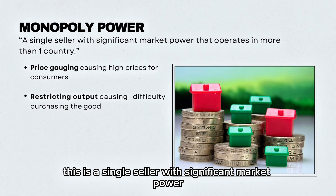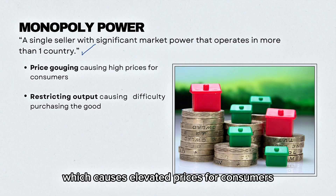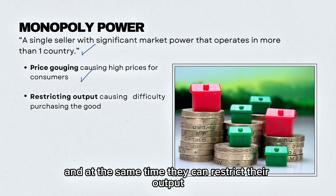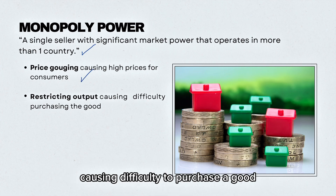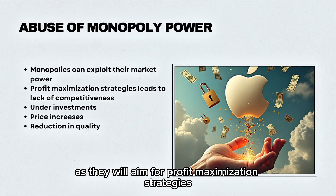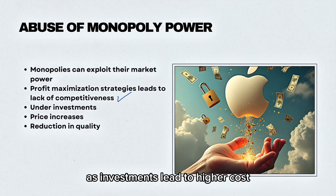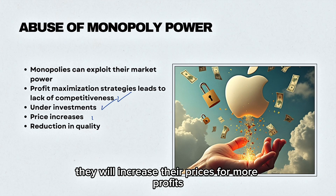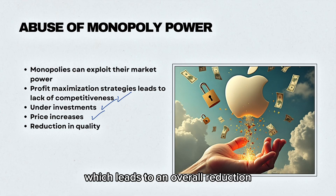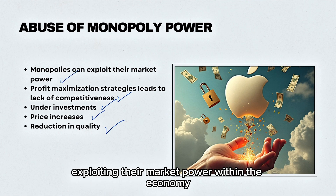Monopoly power refers to a single seller with significant market power that operates in more than one country. The problem with monopolies is that they can price gouge, causing elevated prices for consumers, and at the same time restrict their output, causing difficulty in purchasing a good. The reason for this market failure is because monopolies abuse their power — aiming for profit maximisation strategies which leads to a lack of competitiveness. As investments lead to higher costs, they will under-invest, increase their prices for more profits, which leads to an overall reduction in the quality of their product, clearly exploiting their market power.